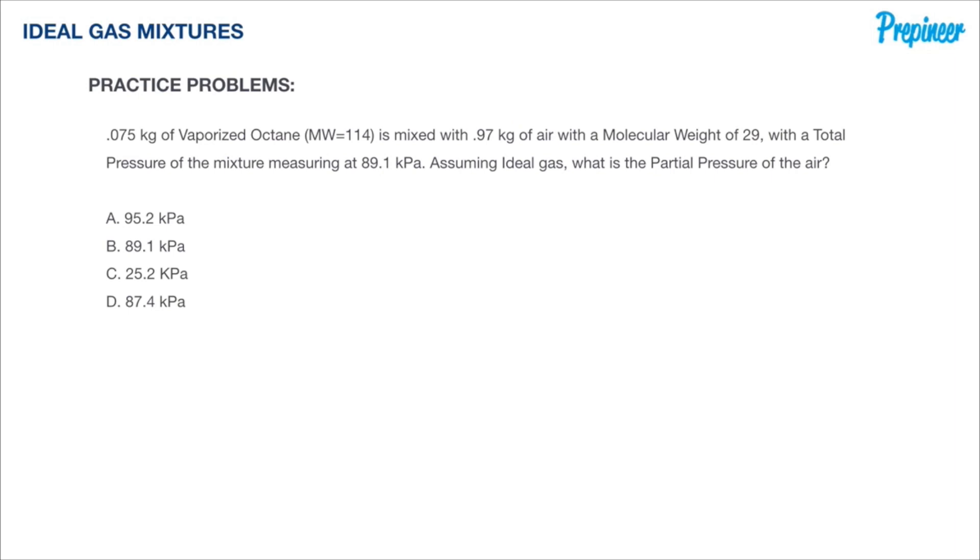This problem says 0.075 kilograms of vaporized octane with a molecular weight of 114 is mixed with 0.97 kilograms of air with a molecular weight of 29, for a total pressure of the mixture measuring at 89.1 kPa. Now assuming ideal gas, what is the partial pressure of air?